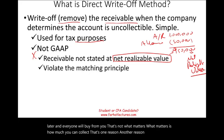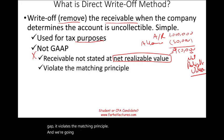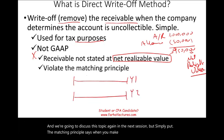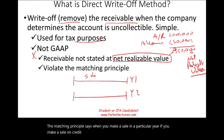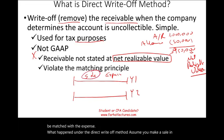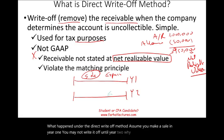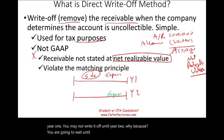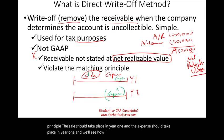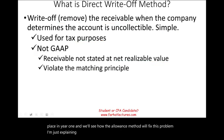The second reason the direct write-off method is not GAAP is that it violates the matching principle. The matching principle says that when you make a sale on credit in year one, the related expense must also be matched to year one. Under the direct write-off method, you may not write off the account until year two — when you determine it's uncollectible. So the sale is in year one and the expense is in year two, which is a violation. We will see how the allowance method fixes this problem.